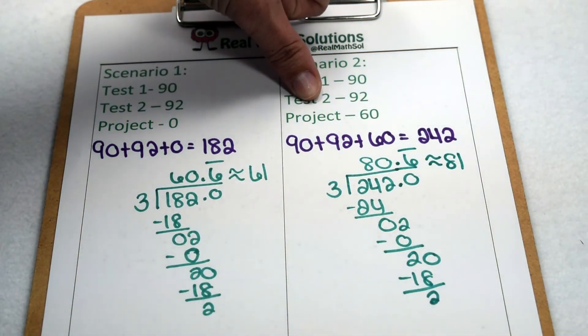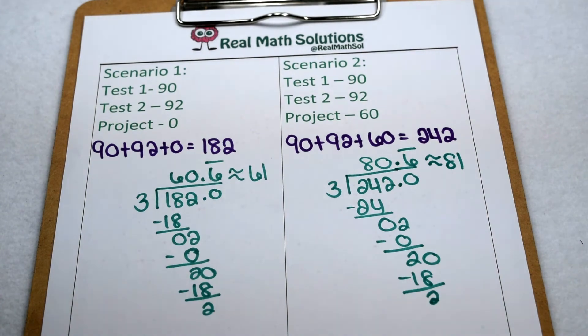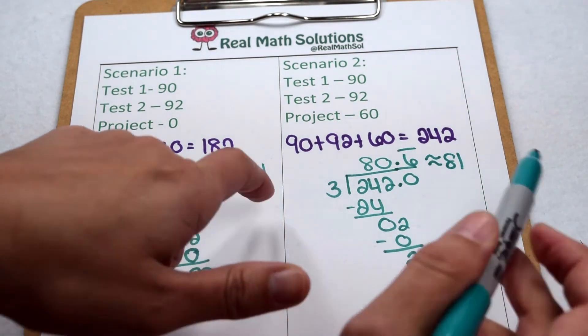So going ahead and turning our project in late, even though we didn't do a very good job on it, means there's a 20 point difference in the average of our grades.